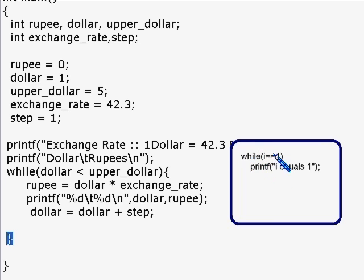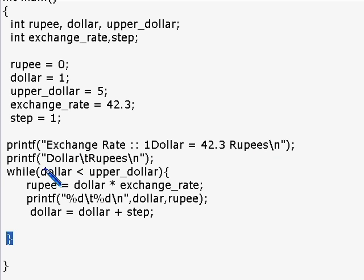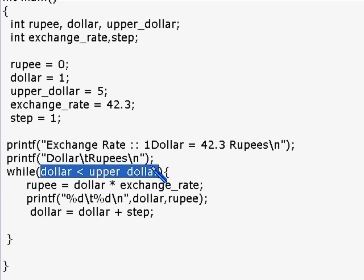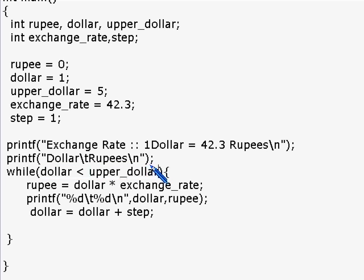In this example, if I happens to be one and you have this structure, your program will never end unless you stop it manually. It will keep printing 'I equals one' continuously. These are called infinite loops. When you have no condition inside a while loop, you are in an infinite loop. It is very important that you have a proper condition so you don't end up in an infinite loop.